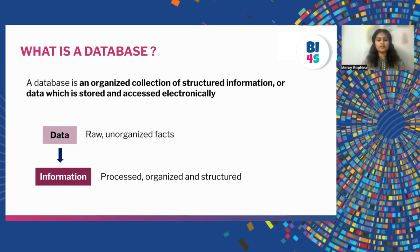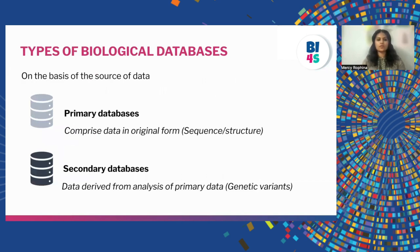This means that data can be converted into information when we analyze or process it. Now talking about what are the different types of biological databases — on the basis of the source of data, the biological databases can be categorized into two major types: primary databases and secondary databases.